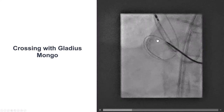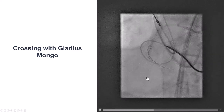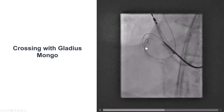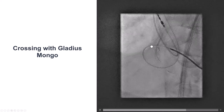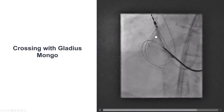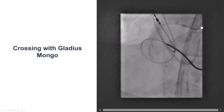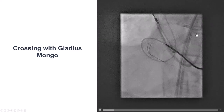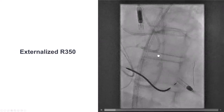The way to solve this is to use larger balloons to create a dissection in the proximal part of the vessel that can connect with the retrograde guide wire. After doing this with increasingly larger balloons, we were eventually able to advance the retrograde Gladius Mongo all the way into the guide extension and into the antegrade guide catheter.